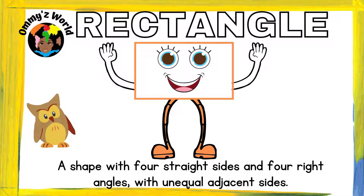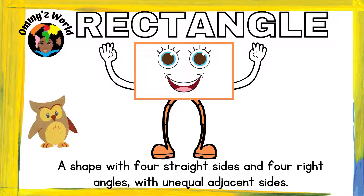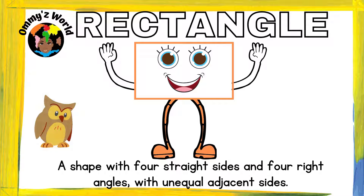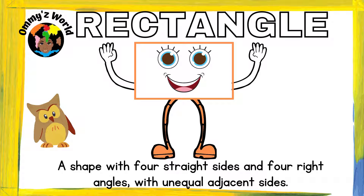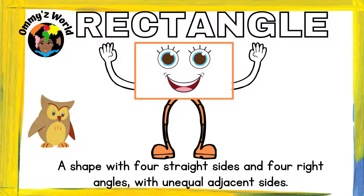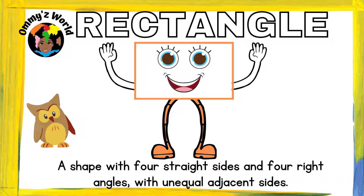The next shape is a rectangle. A rectangle is a shape with four straight sides and four right angles with unequal adjacent sides. You see how two sides are shorter than the other? That's a rectangle, and that's what makes it different from a square.